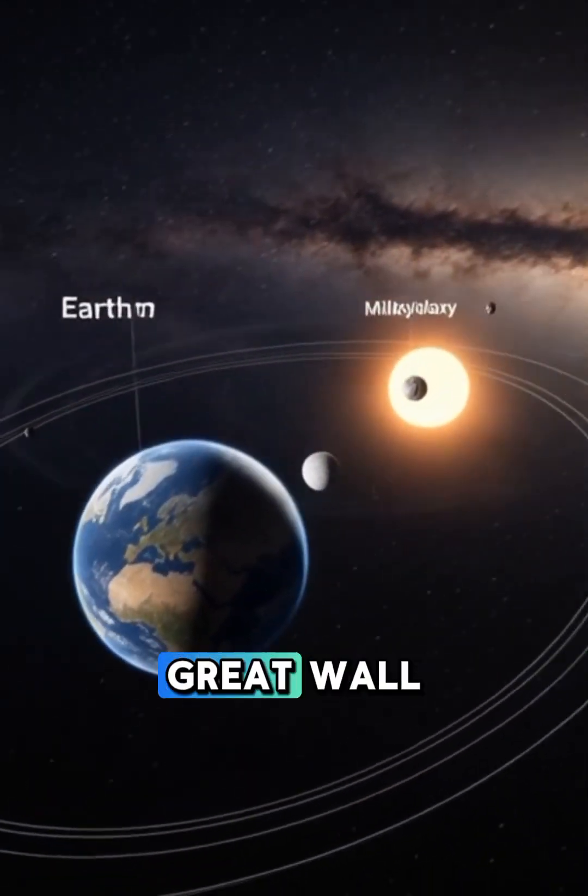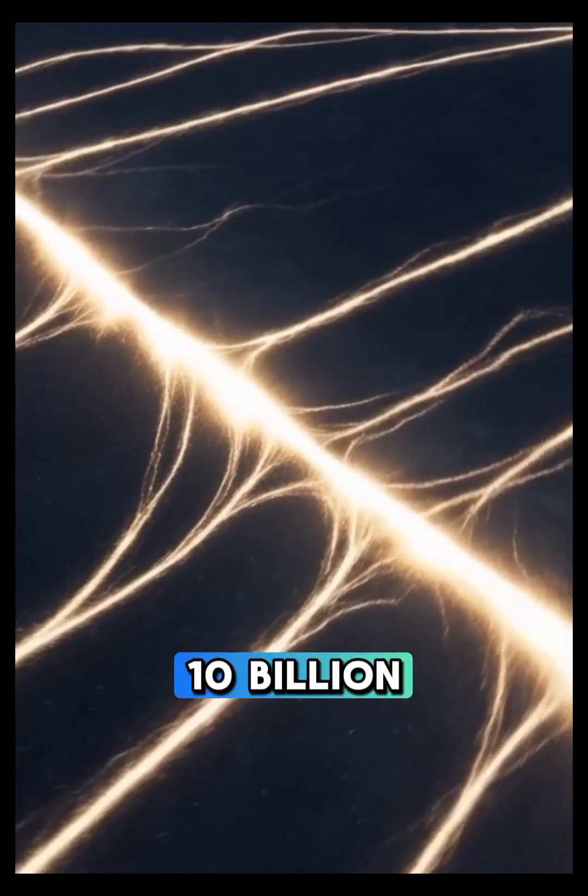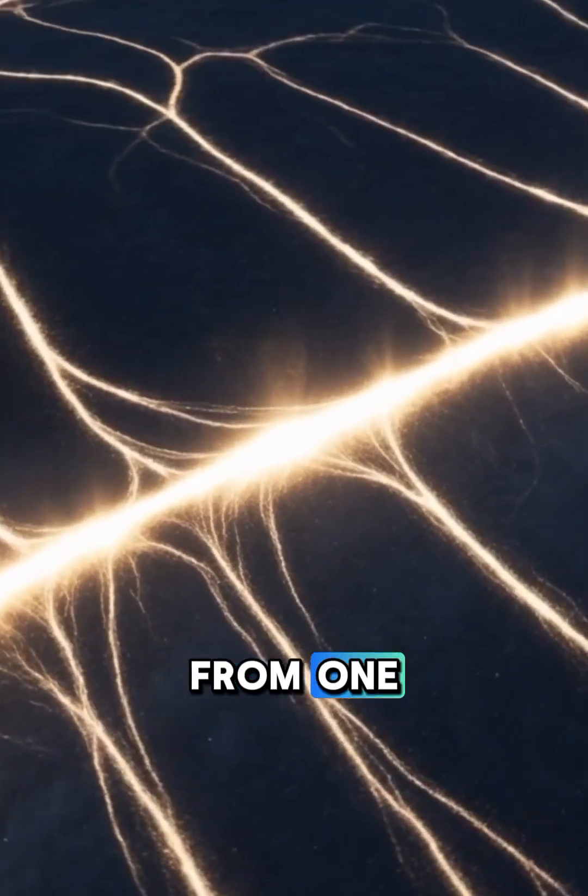Meet the Hercules-Corona Borealis Great Wall, the largest known structure in the observable universe. A cosmic superstructure so vast that light takes 10 billion years just to travel from one end to the other.